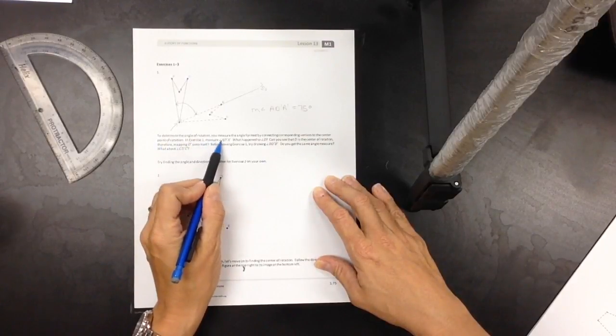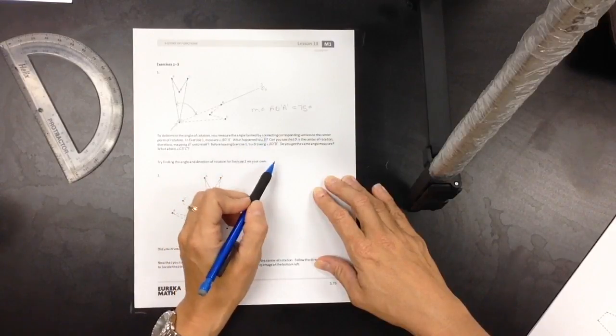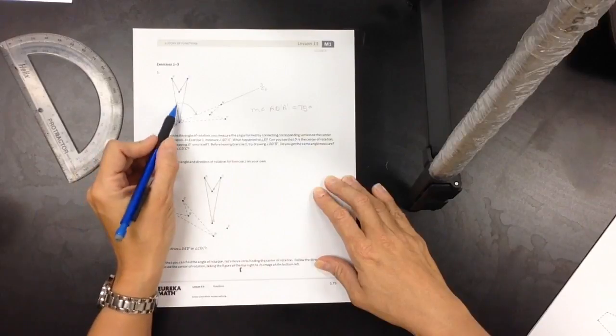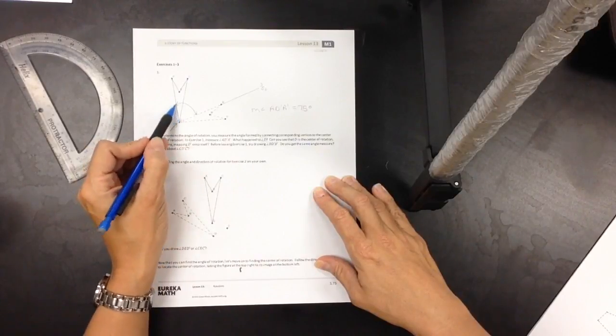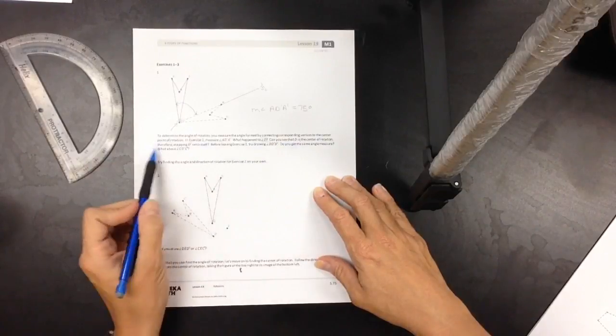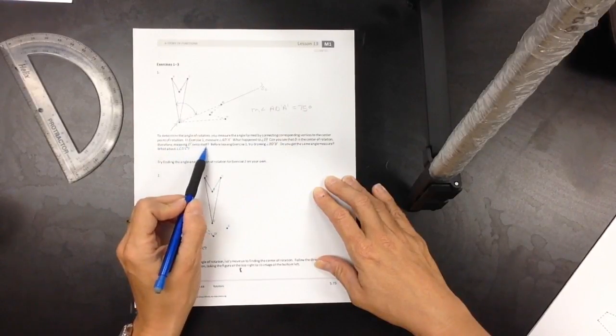In exercise one, measure angle A, D prime, A prime. What happened to angle D? Can you see that D is the center of rotation? Yes, because that is where our center is that we measured. Therefore, mapping D prime onto itself. So D and D prime are the same.